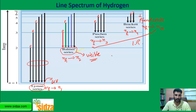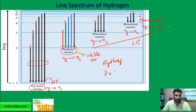We have a formula that helps us find the wave number, from which we can also calculate the wavelength. This formula was given by Johannes Rydberg. The Rydberg equation is: wave number = 109,677 × (1/n1² − 1/n2²) per centimeter, where 109,677 is the Rydberg constant.